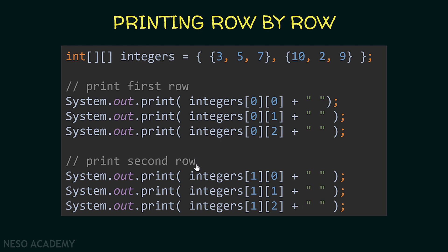Now let's print the second row. We are going to print integers[1][0], then integers[1][1], and finally integers[1][2]. So we have the same thing but now the index of the row is equal to one. So we are going to use nested loops. Suppose the first loop has a variable i starting at zero ending at one — we use i as the index of the row. Inside this loop we have another loop with variable j starting from zero up until two, so in each iteration of the outer loop we iterate over all elements in the current row.